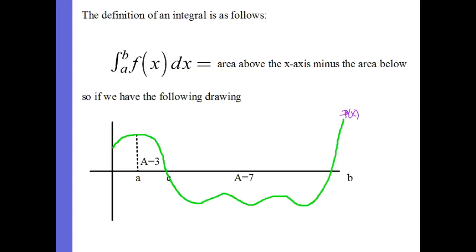For example, we have this green crazy-looking curve. Is that green crazy-looking curve continuous? Yes. We are given that the area under this curve is 3 and the area from this curve to the line is 7.